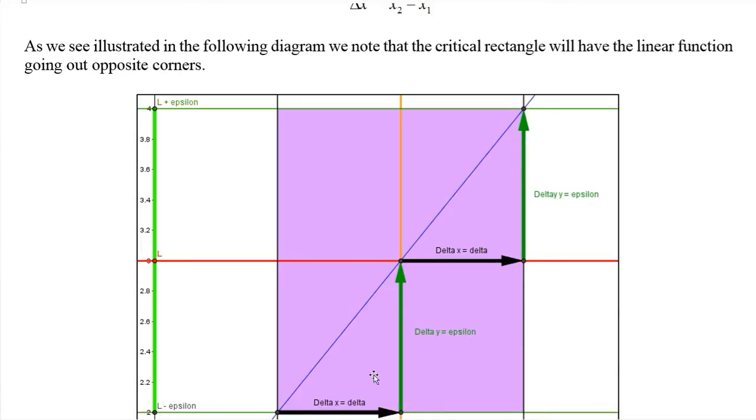We know the vertical change is epsilon in both cases. One of these, if it goes to the corner, will be delta. And since they both go to the corner, it will both be the same delta.